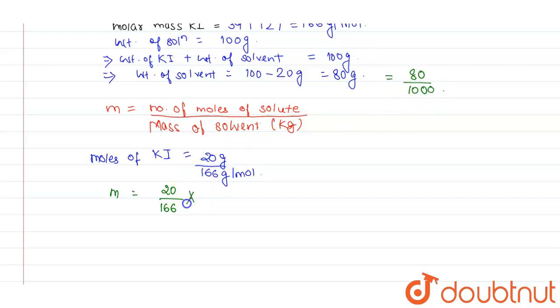Here it will be 1000 by 80. The value comes out to be 1.51 mol per kg.